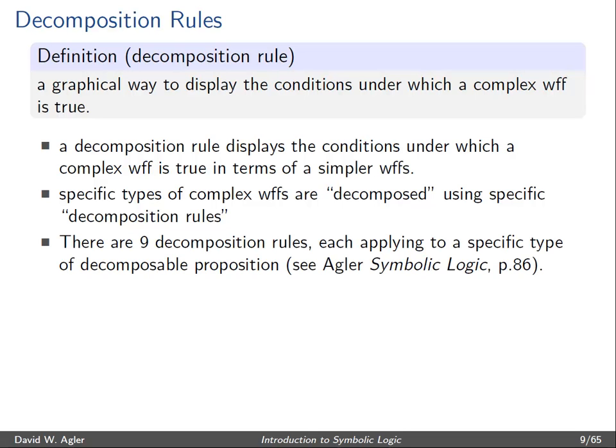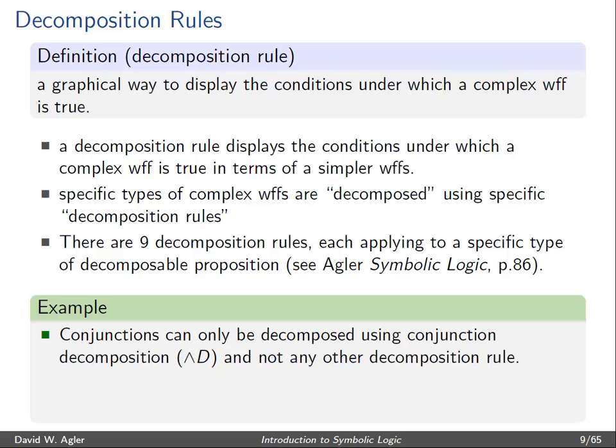There are nine different decomposition rules, and each one of these is going to correspond to a specific type of decomposable proposition. One thing to note is that each one of these decomposable propositions will have its own exclusive decomposition rule. So for example, conjunctions,